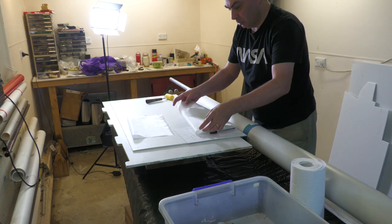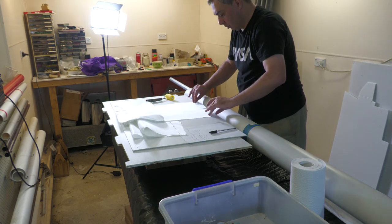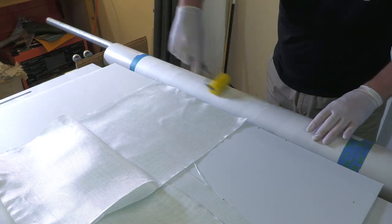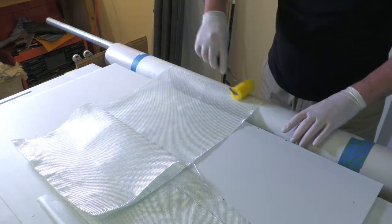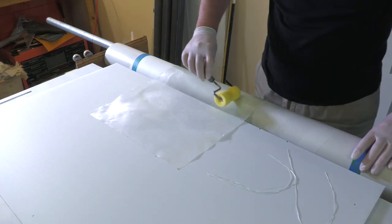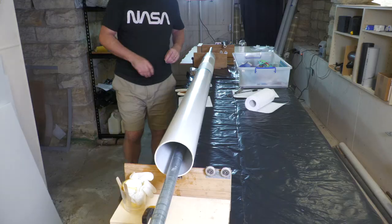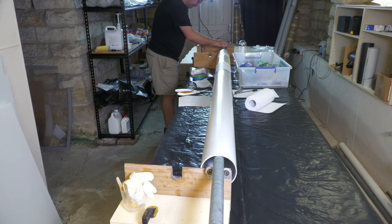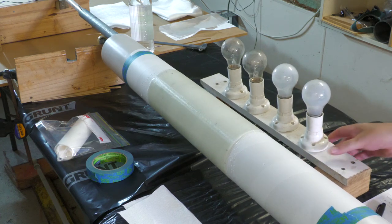We're using four wraps of 200 gsm cloth here. This is a bit of a test to see if four wraps are going to be strong enough. Once it is done we put it on the rotisserie for a couple of hours while the epoxy gels. We add some heat lamps just to make that process a little faster.